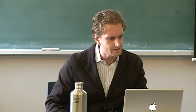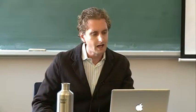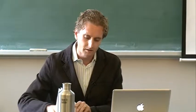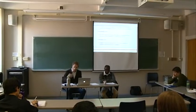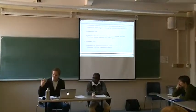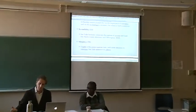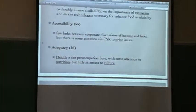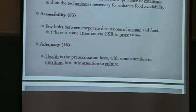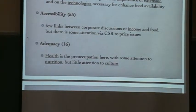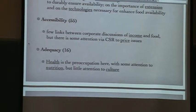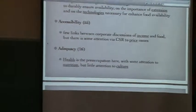On accessibility, many companies are happy to talk about income generation — how large-scale agricultural plantations, resource operations, and extractive industries lead to income, which enables people to purchase food. Getting a job is framed as a source of food security in that literature.